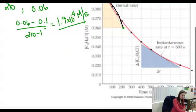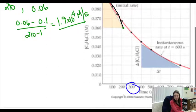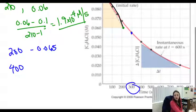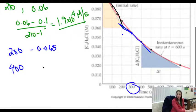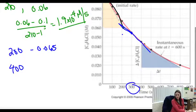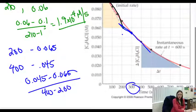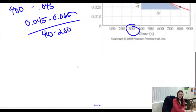For 300 seconds, I do the same thing. I pick two points around 300 — at 200 seconds and 400 seconds — and find where the tangent line crosses. At 200 seconds the tangent line is at about 0.065, and at 400 seconds it crosses at about 0.045. So: 0.045 minus 0.065 all over 400 minus 200, giving a slope of 1.0 times 10 to the negative 4th molar per second.